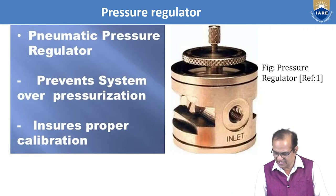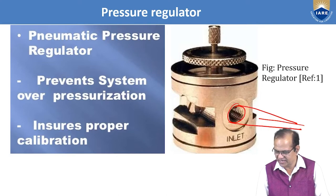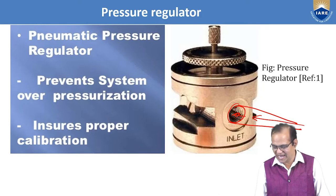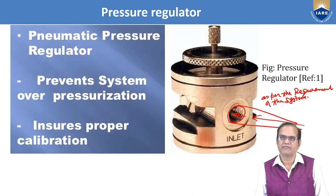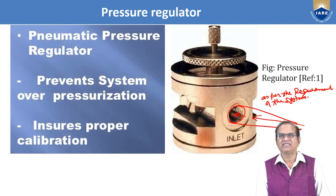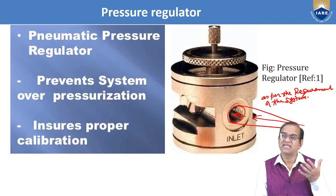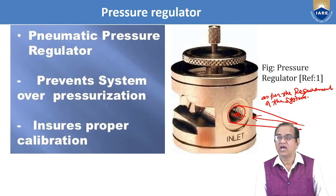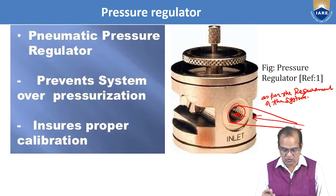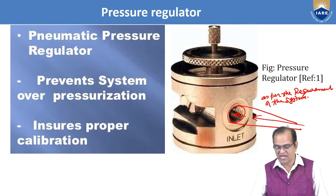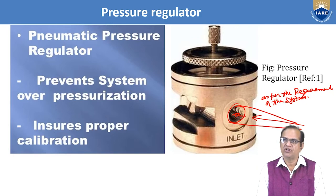Another component is the pressure regulator. A schematic shows the inlet pipe with air entering, and the spring-loaded regulator controls pressure as per the requirement of the pressure system. The pneumatic pressure regulator prevents system over-pressurization — if pressure is too high, pipes may burst, filters may be damaged, or leakages may occur. The system must operate within the given pressure range, not too high and not too low. Proper calibration of the system is also ensured by this component.